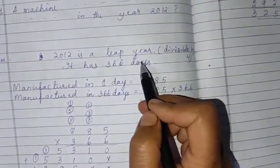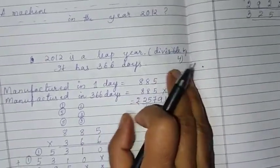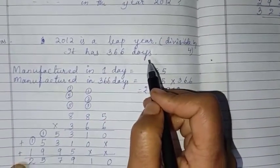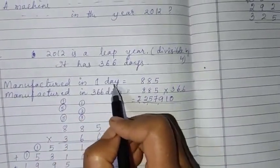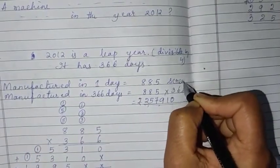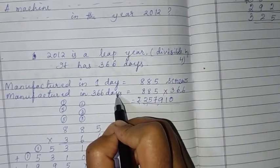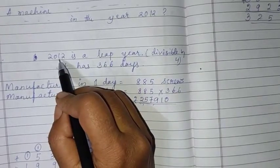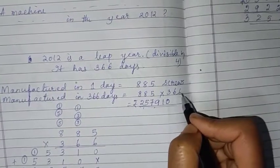So now see. 2012 is a leap year. You have to mention in the copy like this. Why? Because it is divisible by 4, and it has 366 days. Why, children, it is 366 days? Because it is a leap year. So manufactured in one day: 885 screws. And next, manufactured in 366 days. Why you have written here 366? Because 2012, the year has 366 days.